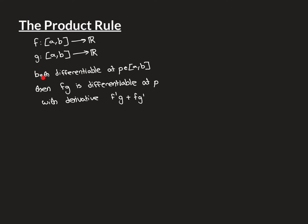and both functions are differentiable at some point p inside their domain, then you can conclude that the third function you get by multiplying f with g is also differentiable at this point p, where both the other two functions are differentiable, and it will have derivative equal to f prime g plus f g prime, where all of these things are evaluated at p.